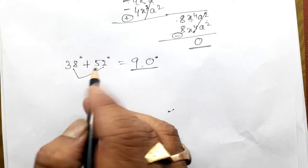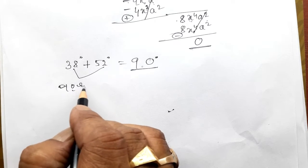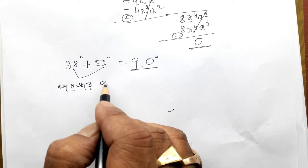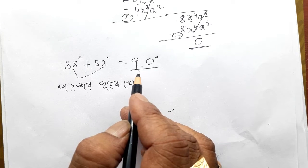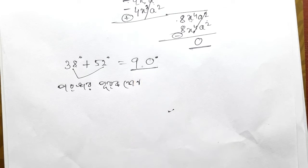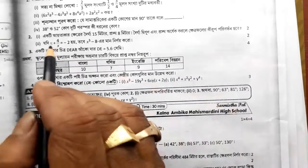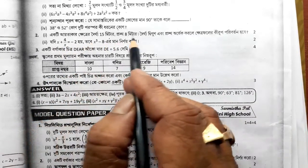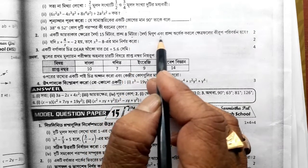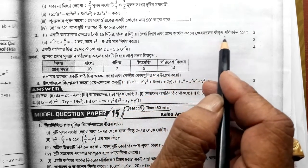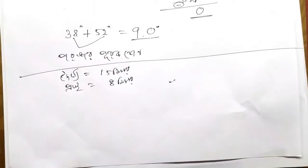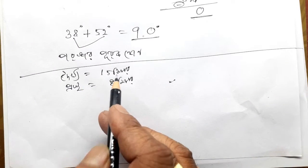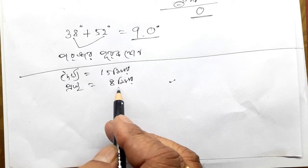So here we say 60 degrees, or 80 degrees, or 80 degrees. This is 5 meters.